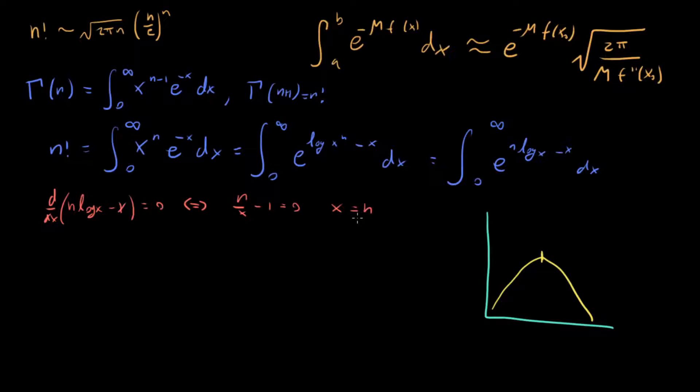We also want to find the second derivative of this function. So if we take two derivatives, d squared dx squared of n log x minus x. What's going to happen?